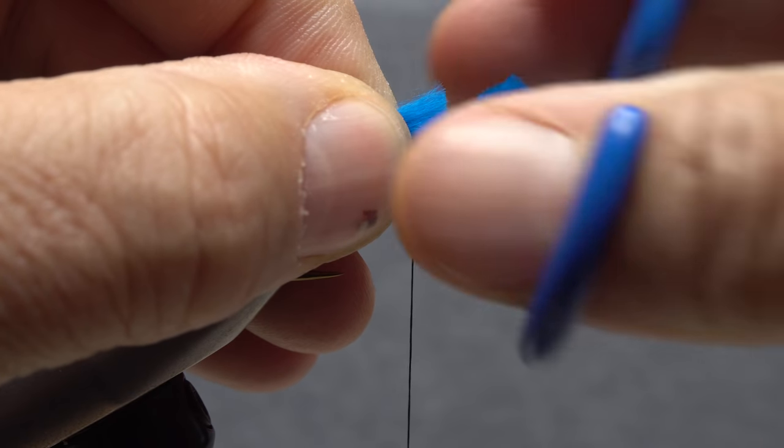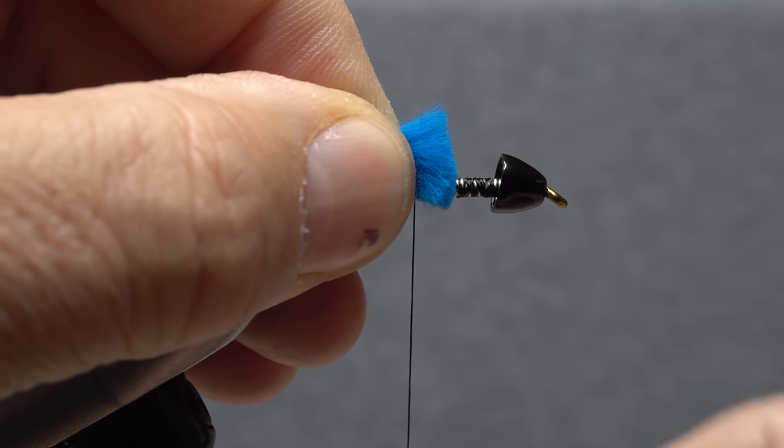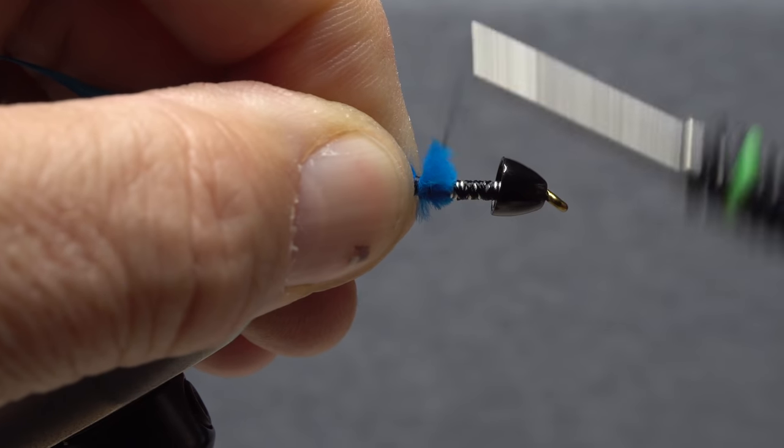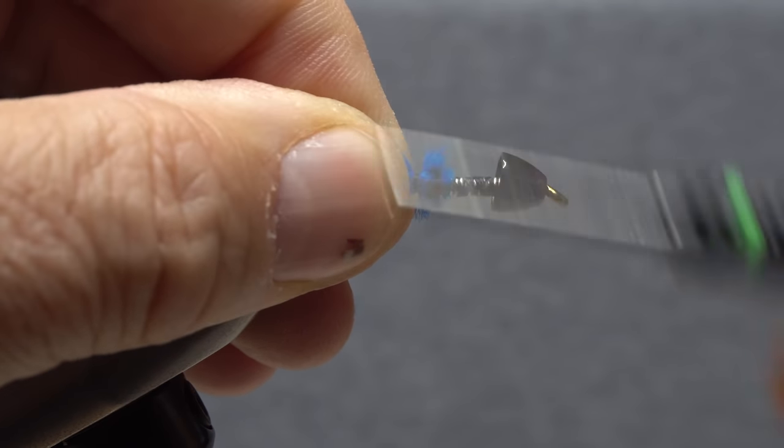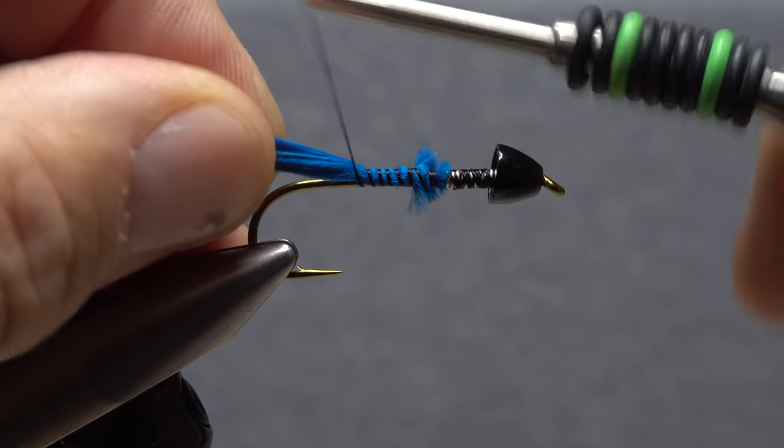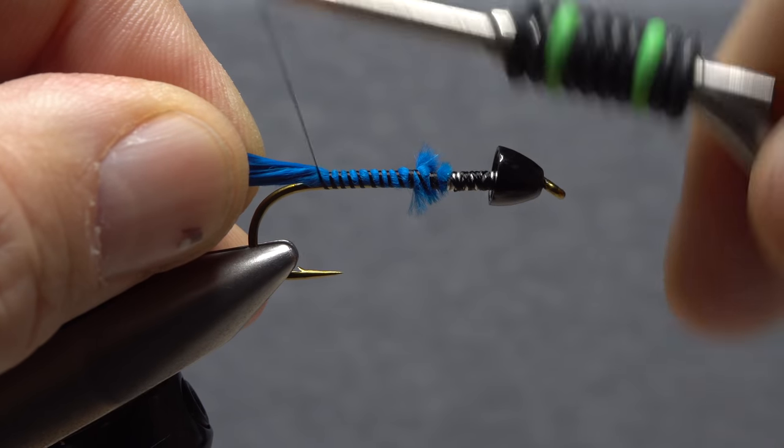Snip off the excess butt ends of the fur at the rear edge of the wire wraps. Give your bobbin a good counter-clockwise spin so your tying thread will jump rearward and catch the butt ends of the fur. Continue taking thread wraps to bind the fox to the top of the hook shank all the way back to the start of the bend.